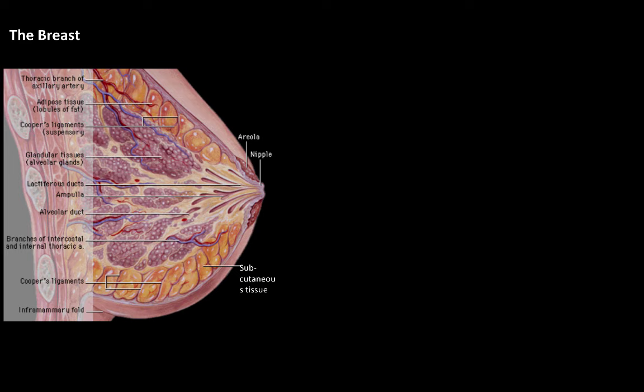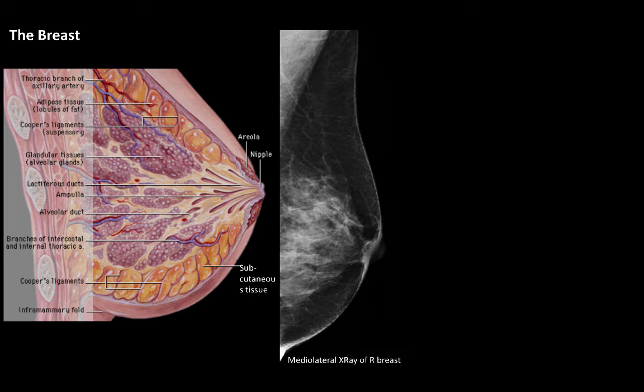Here is an image of the normal anatomy of the breast. On a medial lateral x-ray we can see the pectoralis major muscle and the Cooper's ligaments, also known as the suspensory ligaments of the breast, which are connective tissue septa extending from the clavipectoral fascia towards the skin.